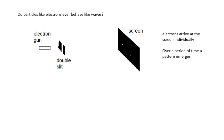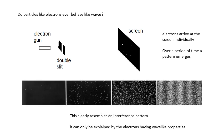Remember Young's double slit experiment. What would happen if we did that with electrons? We have an electron gun, we fire it through a double slit, we have a screen, and whenever an electron arrives on the screen there's a flash of light. We leave it running for a long time and a pattern emerges. And notice, we get something that looks very much like an interference pattern — maxima and minima. Lots of electrons arriving at certain places, not very many at others. It looks like an interference pattern.